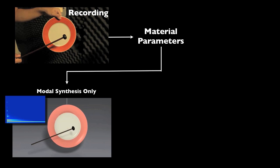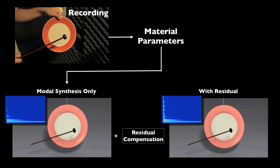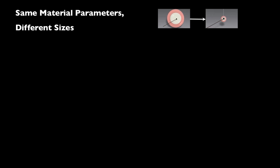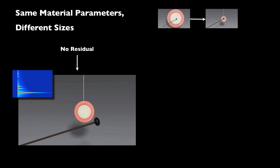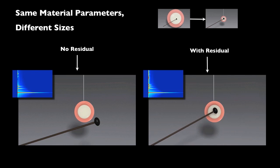We perform parameter estimation and residual compensation. The material and residual are transferred to a smaller object, and an object of a different shape.